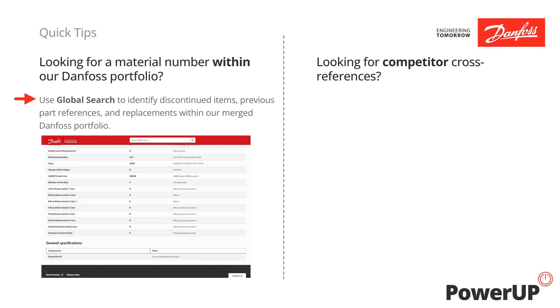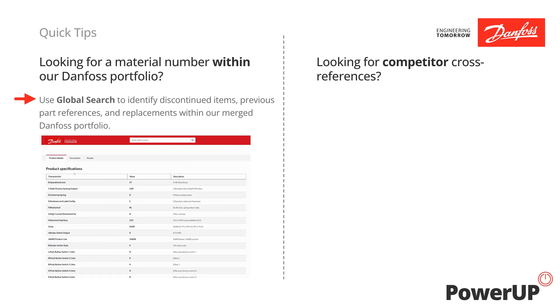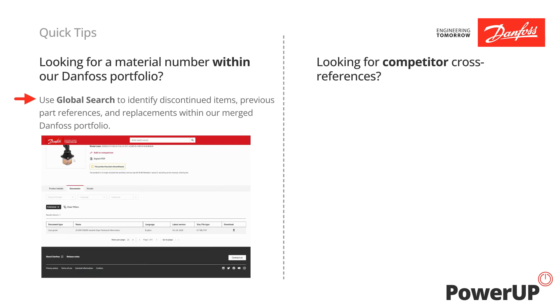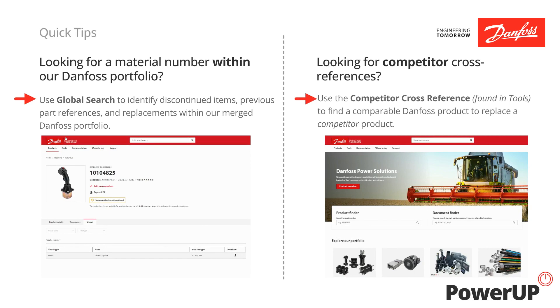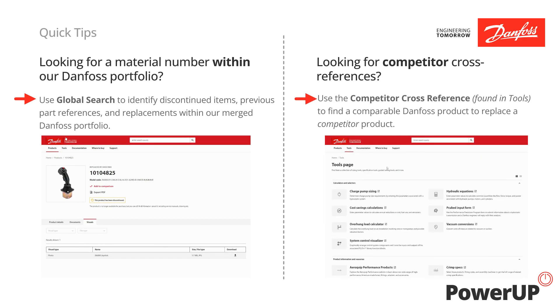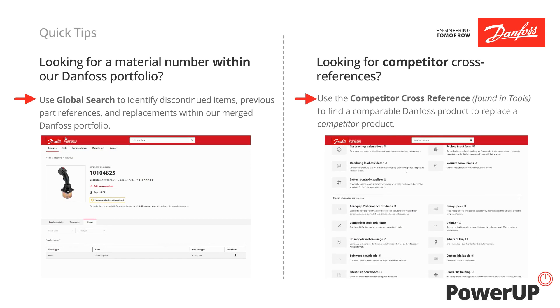This may include discontinued or obsolete parts and item replacement suggestions. You'll notice discontinued part pages and additional information can be easily found to support our products in the market. The competitor cross-reference tool allows you to search for a specific competitor part number and find a DANFS equivalent.